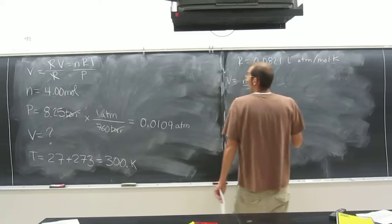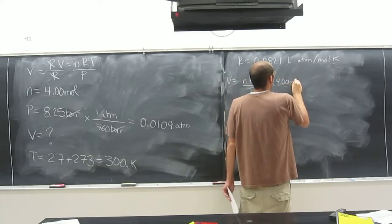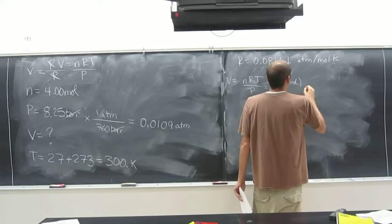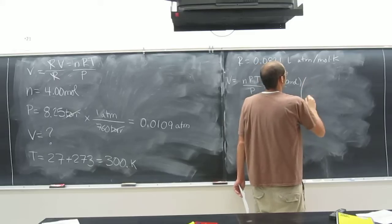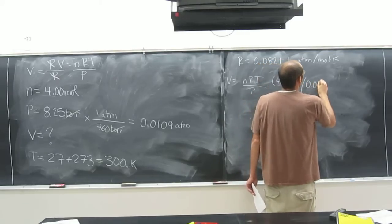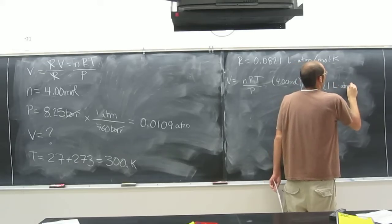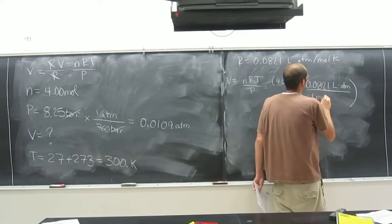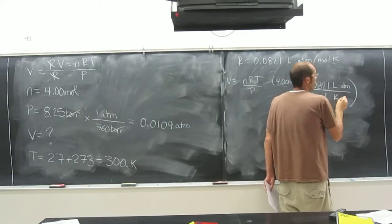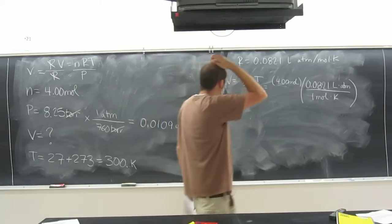So just plug and check now. We know N. 4.00 moles. We know R. How are we going to write it? Very good, guys. On two boxes, not one. Why would you do that? Because it's easier to see the cancel.